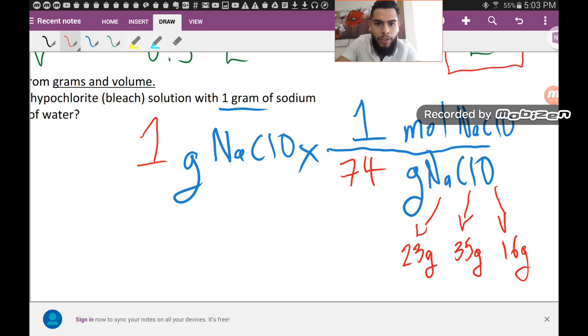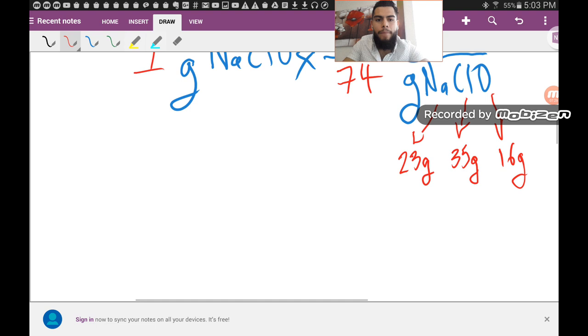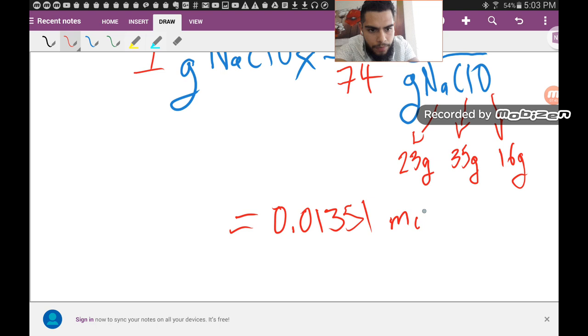So the number of moles of that, we say: one times one is one, divided by 74, equals 0.01351. We're going to leave it at that. Moles of sodium hypochlorite, NaClO.